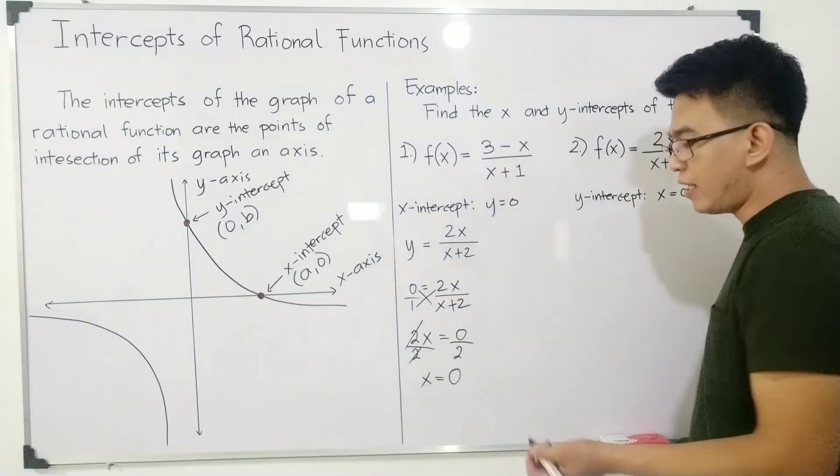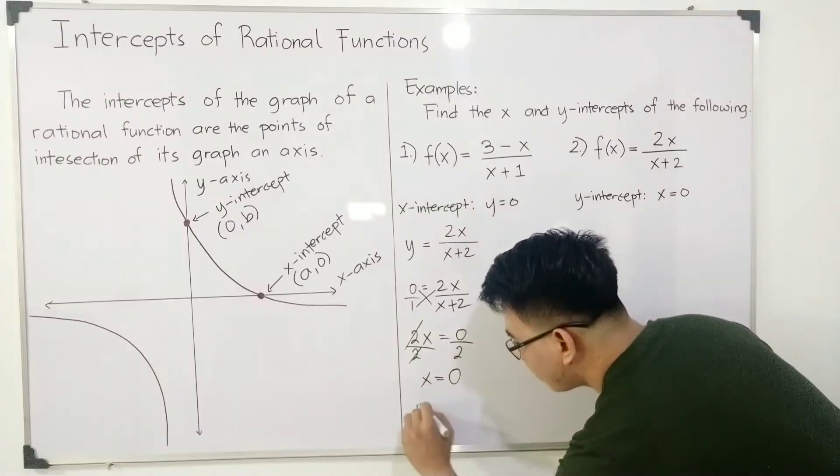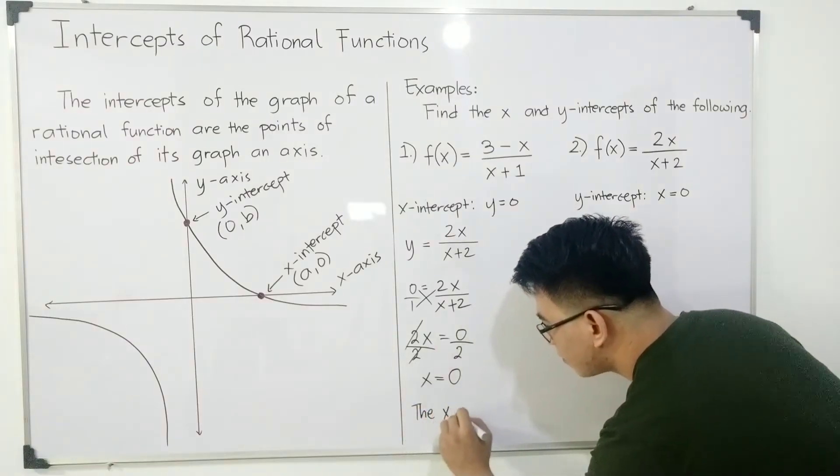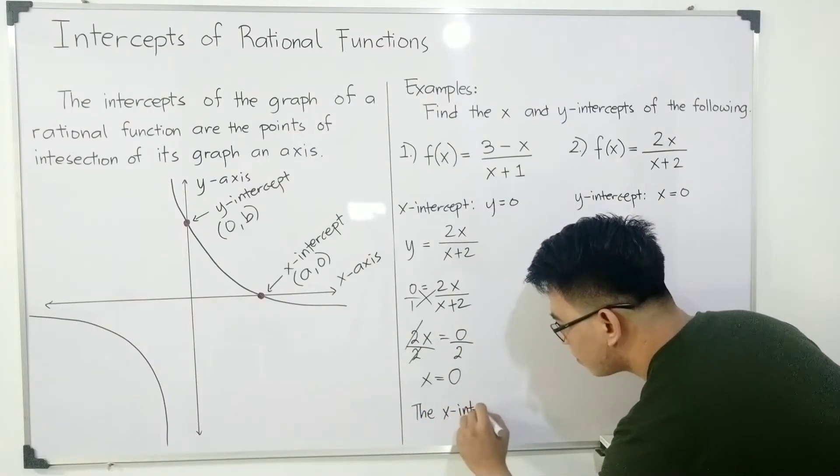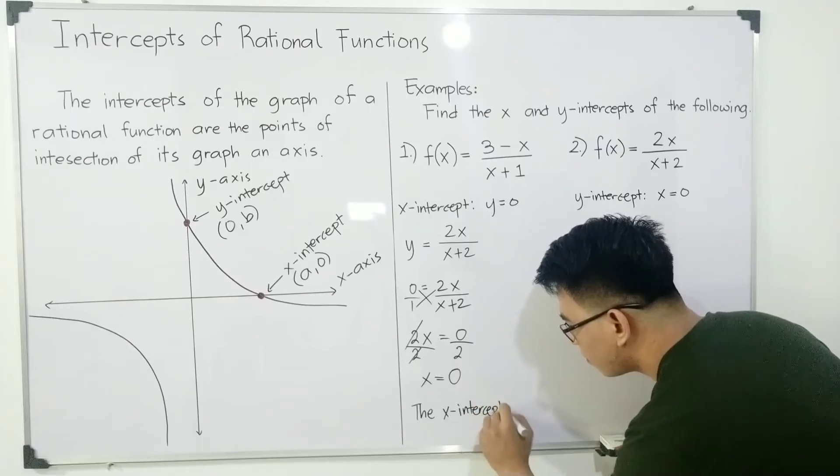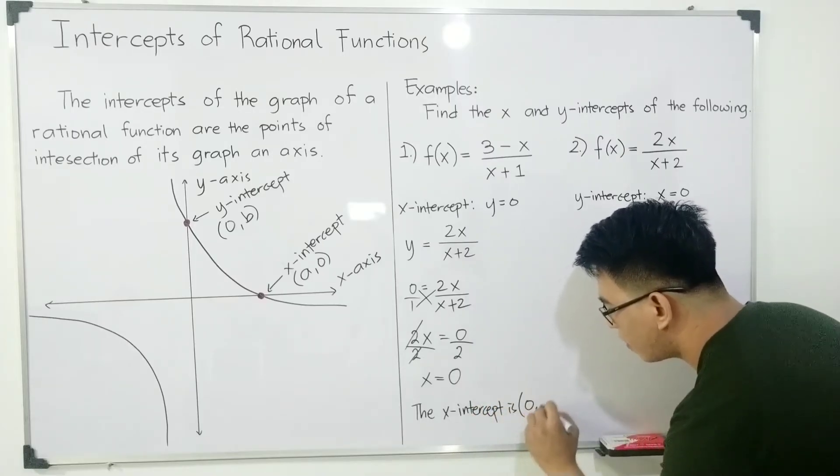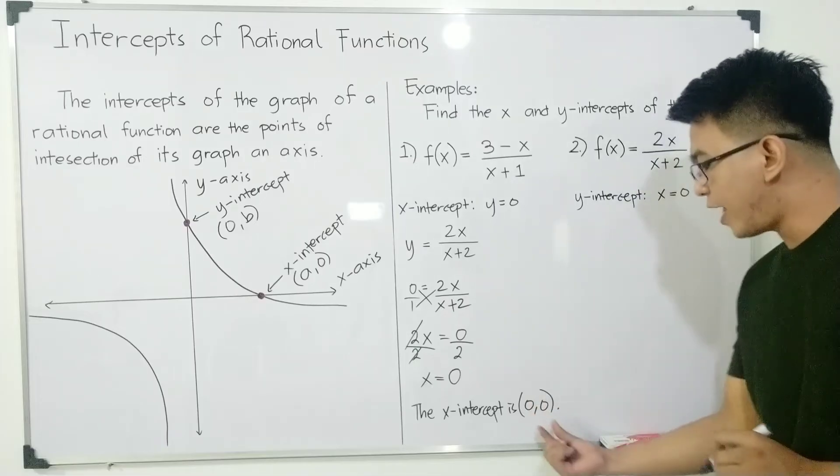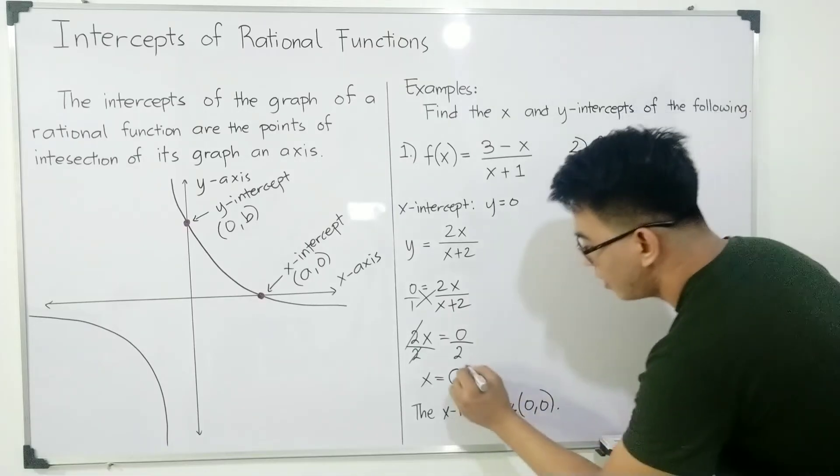Now, what is our x-intercept here guys? The x-intercept is (0, 0). These are the coordinates of our x-intercept.